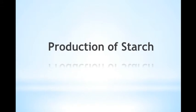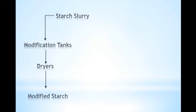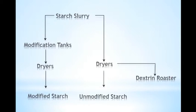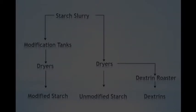Okay, then how about the production of starch? We can see from this graph the starch slurry can go into the modification tanks and then dryers and we can get the modified starch. If directly go into the dryers, we can get the unmodified starch. Or from the dryers to dextrin roaster, we can get the dextrin.